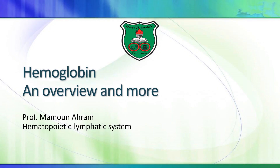This is the first lecture of biochemistry in the hematopoietic lymphatic system. We'll be talking about hemoglobin — refreshing your memories from the introductory biochemistry course but adding further information regarding structure, important amino acids, hemoglobin glycosylation and its importance in diagnosing diabetes, and the genetics of the hemoglobin molecule, including how many hemoglobin molecules we have and how gene switching takes place.